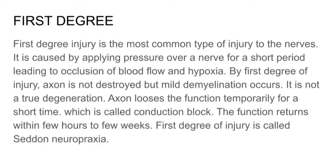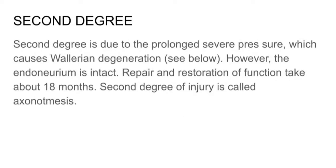In first degree injury, the axon is not destroyed but demyelination occurs. It is not a true degeneration — the axon loses function temporarily for a short period, which is called conduction block. The function returns within a few hours to a few weeks. First degree of injury is called neuropraxia. Second degree injury is due to prolonged severe pressure which causes Wallerian degeneration; however, the endoneurium is intact.